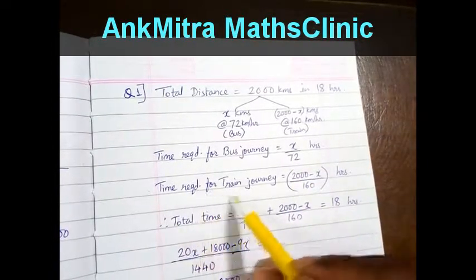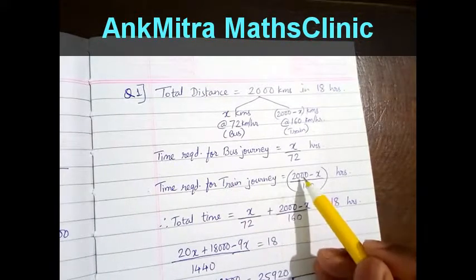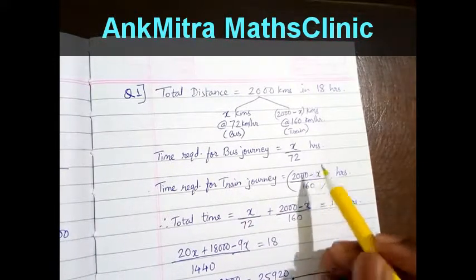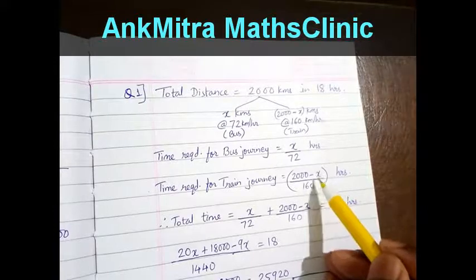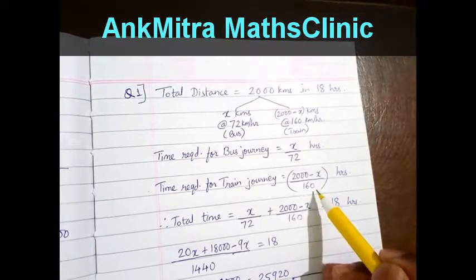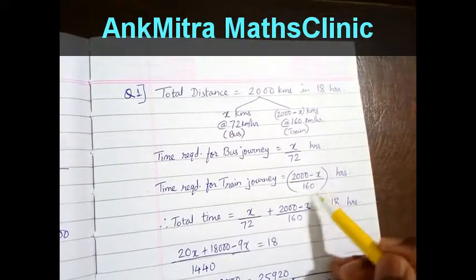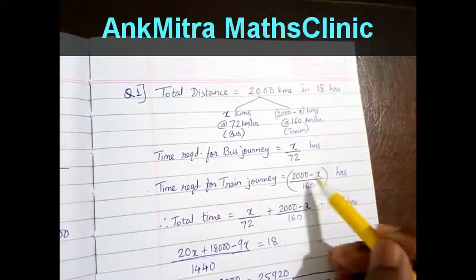Time required for train journey will be distance divided by speed again. So 2000 minus x km upon 160 km per hour which gives this time as hours.